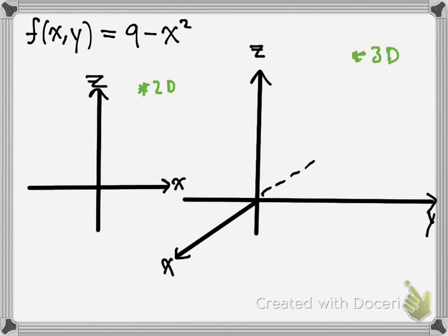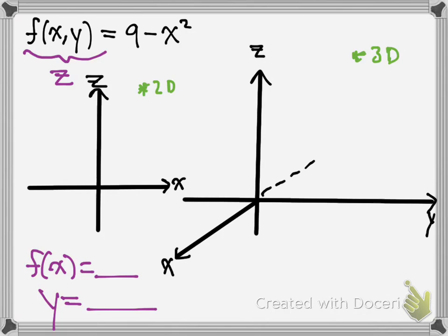Let's try one more. We have f(x, y) = 9 - x². One thing before we start: f(x, y) is pretty much saying z. So z = 9 - x². You can compare this like saying when we say f(x) = something, we say that's y = something. Same thing — f(x, y) = something is the same as z = something.